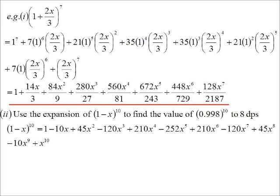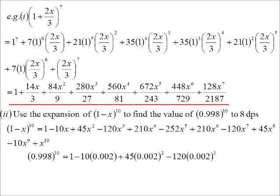But then I can say 0.998 is 1 minus 0.002. But once you get to the power of 4, you don't need to do any more. That's right. Because 0.002 to the power of 4 times 210 to eight decimal places is 0. And so you would just stop there.